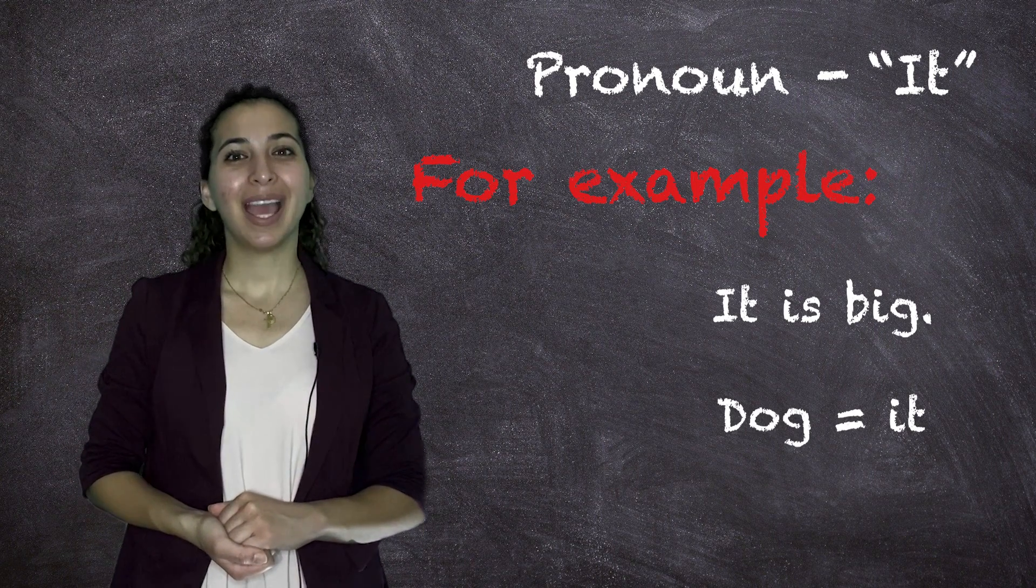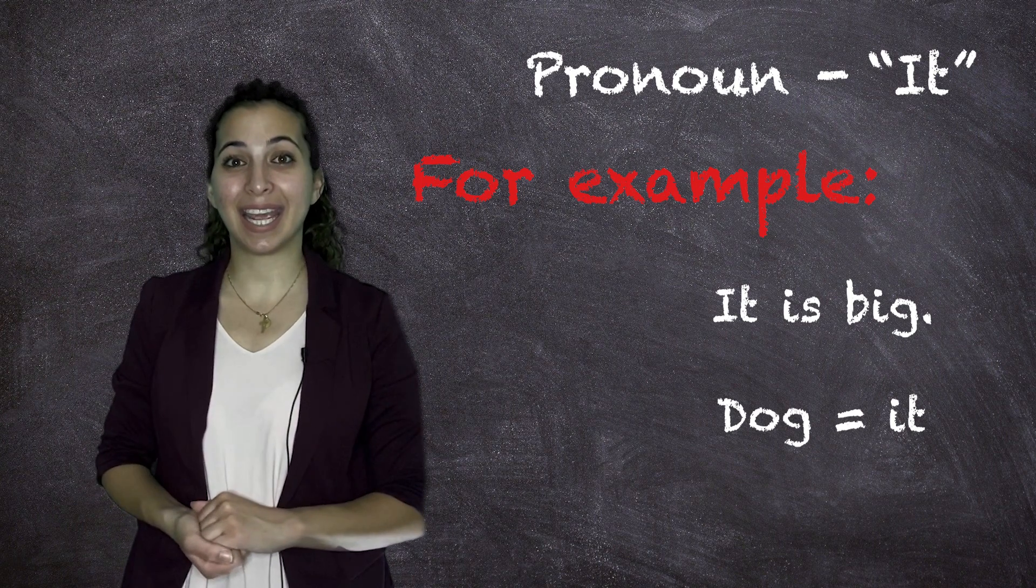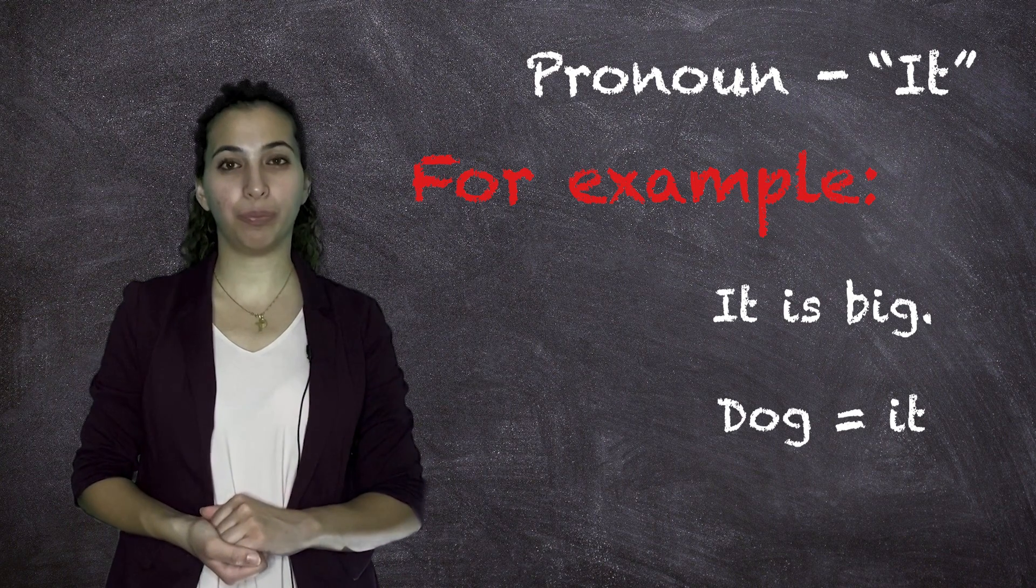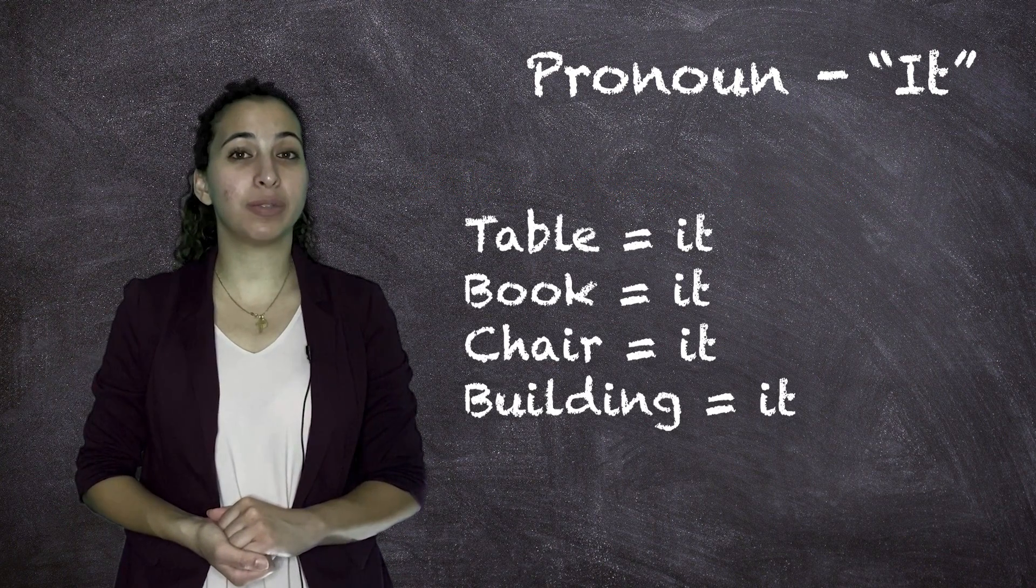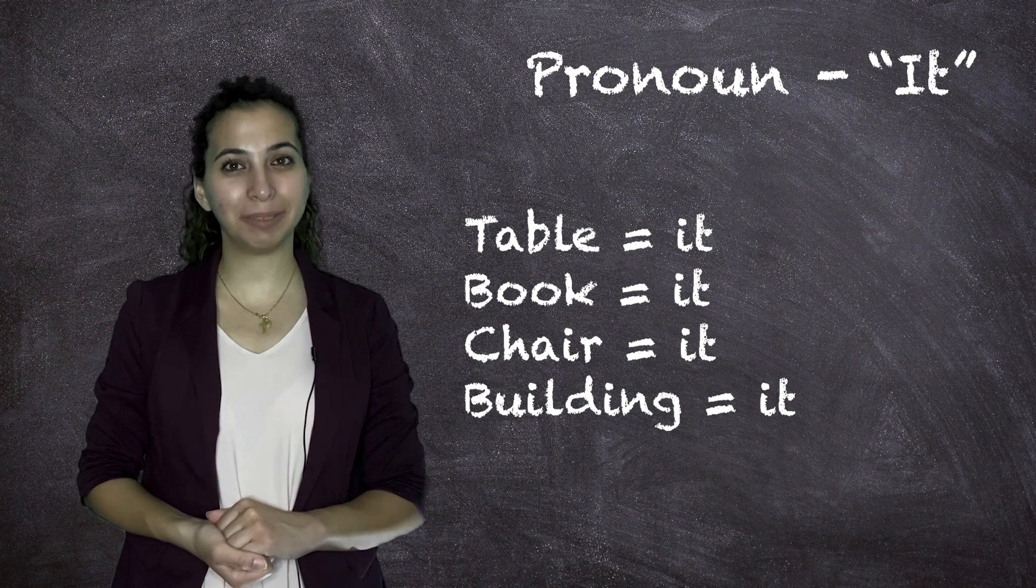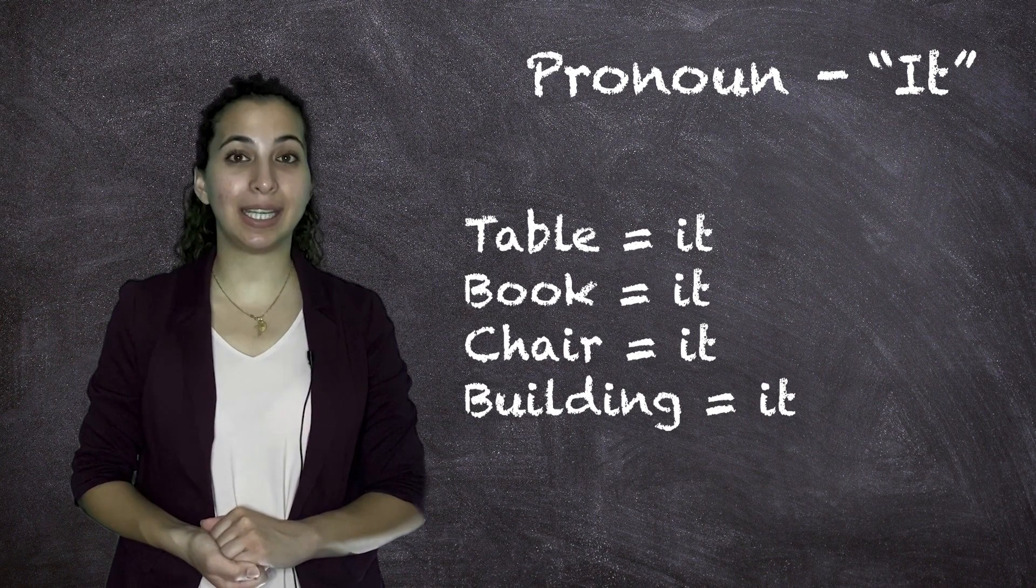For example, if I am talking about a dog, I can say it is big and the it would be referring to a dog. I can use it for a table, a book, a chair, a building. These are all things that we see and we touch.